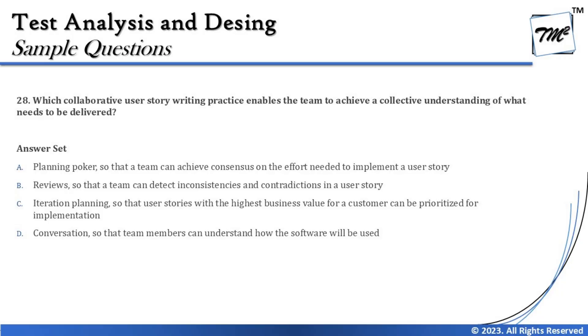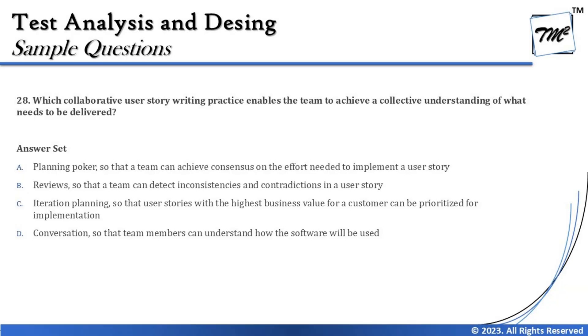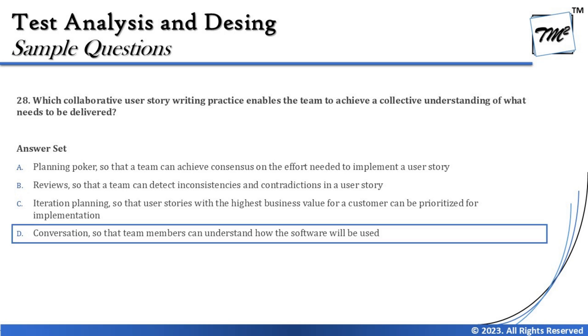Don't connect this to real-world scenarios where understanding happens during sprint planning, because that would be wrong — stories should be understood while being written. Option D says Conversation, so that team members can understand how the software will be used — which completely makes sense as part of collaborative user story writing under the three C's. The right answer for question 28 is D: Conversation, so that team members can understand how the software will be used.